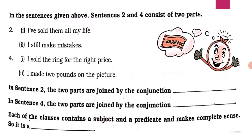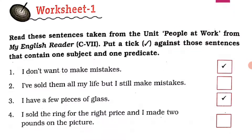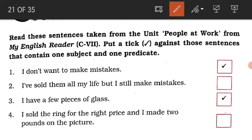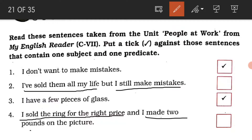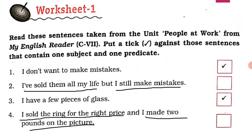In the sentences given above, sentences two and four consist of two parts. Sentence two: 'I have sold them all my life' and 'I still make mistakes' — these are two parts. The very first part is this one, the second part is this one. Sentence four is similar — this one and this one.